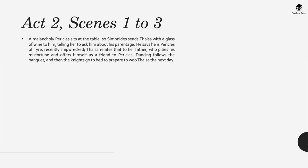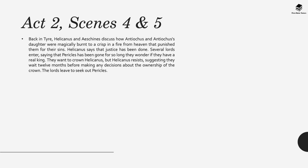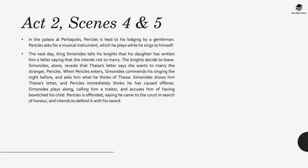Dancing follows the banquet, and the knights go to bed to prepare to woo Thaisa the next day. In Act 2, Scenes 4 and 5, in Tyre, Helicanus and Aeschines discuss how Antiochus and his daughter were magically burnt to a crisp by fire from heaven that punished them for their sins. Several lords enter, saying Pericles has been gone so long they wonder if they have a real king. They want to crown Helicanus, but he resists, suggesting they wait 12 months before deciding. In the palace at Pentapolis, Pericles plays a musical instrument and sings. The next day, Simonides tells his knights that his daughter has written saying she intends not to marry, and the knights decide to leave.